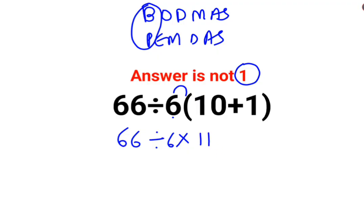At this point, this step is something everyone can do very easily. But at this step, a lot of people goof up and then they do this: 66 divided by 6 multiplied by 11 is 66 and then the answer is 1.